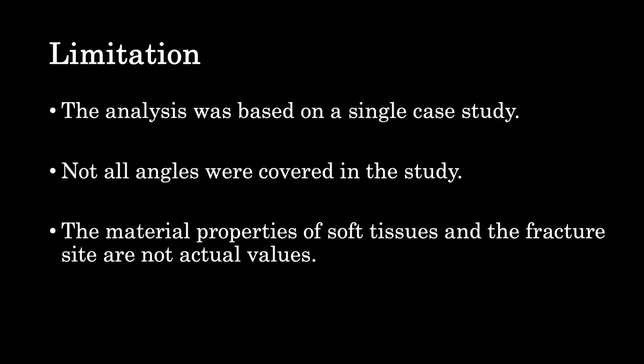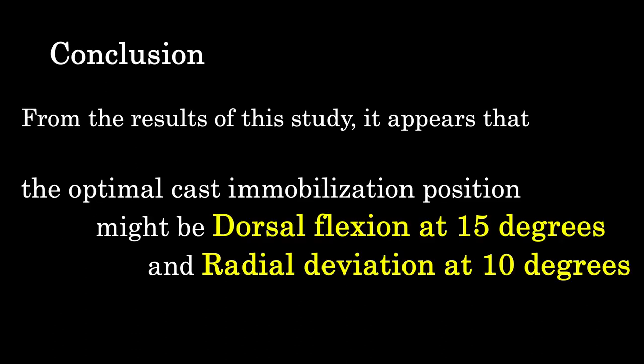Regarding limitations: the analysis was based on a single case study, not all angles were covered, and the material properties of the soft tissue and fracture site are not actual values. In conclusion, from the results of this study, the optimal cast immobilization position appears to be dorsal flexion at 15 degrees and radial deviation at 10 degrees. Thank you.